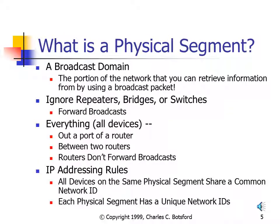One key piece of terminology we must be familiar with is: what is a physical segment? A physical segment can be thought of as a broadcast domain — a portion of the network where all devices can exchange information using a broadcast packet. If two devices are separated by a repeater, a bridge, or a switch, they are considered in the same broadcast domain because these devices will forward broadcasts. However, if we have a router, a router will not forward broadcasts, and routers really define our physical segments.